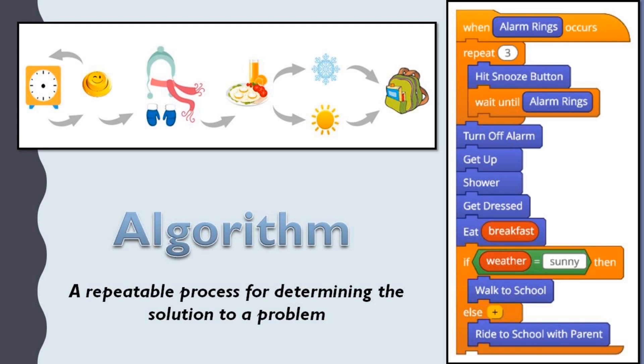And if the weather is sunny, then you walk to school. If it is not, you ride to school with your parent. So this is an algorithm that you repeat every weekday.